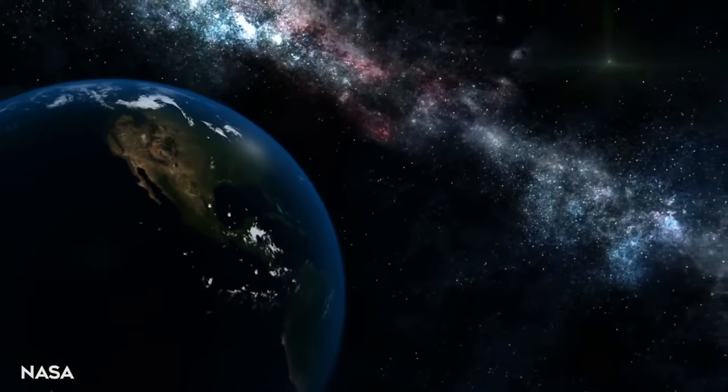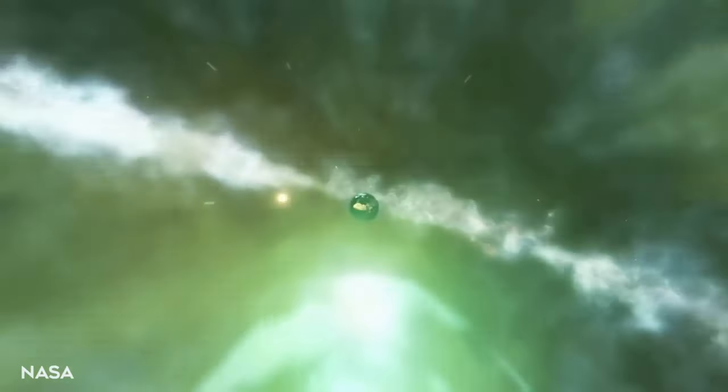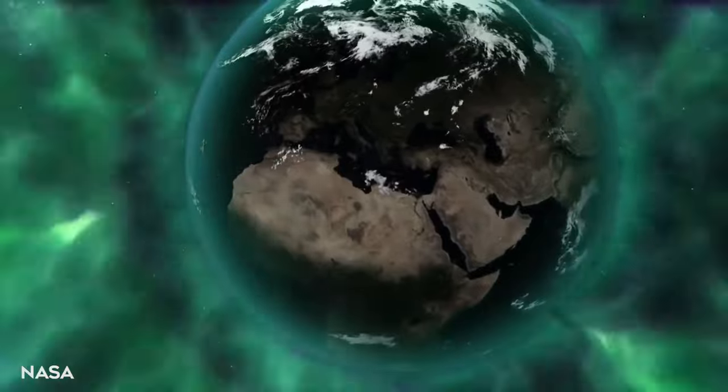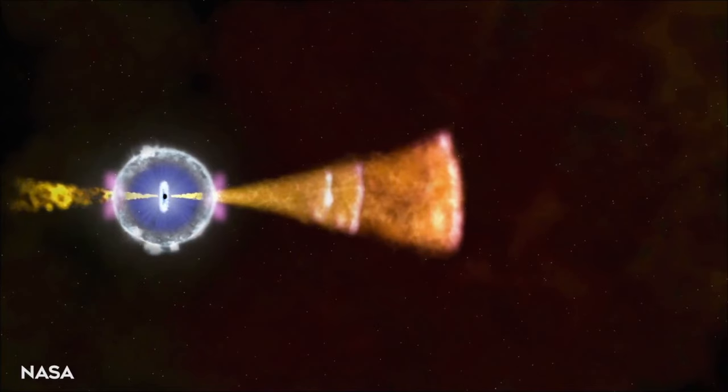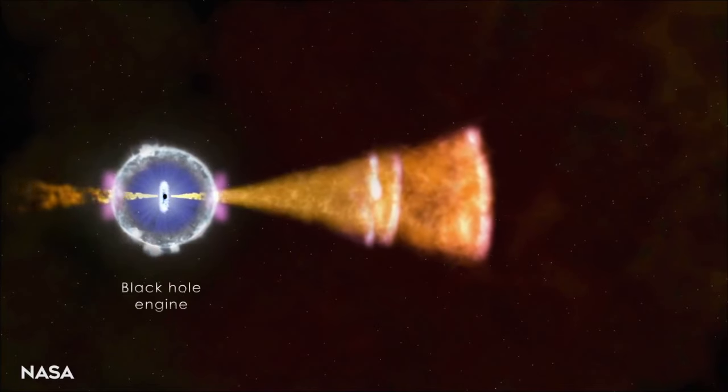Astronomers estimate that for every GRB that we observe, there are several hundreds more that we don't see, those which are oriented in directions away from us.